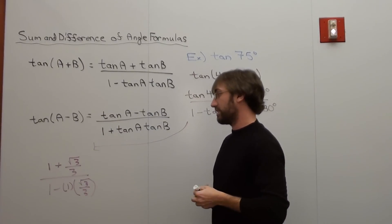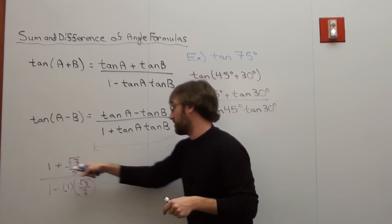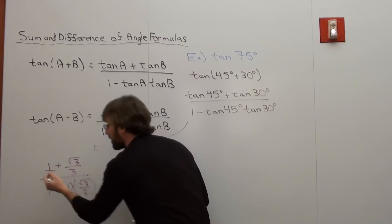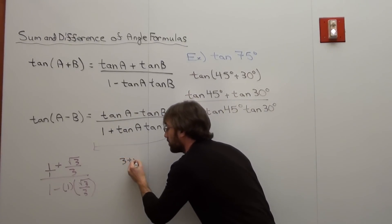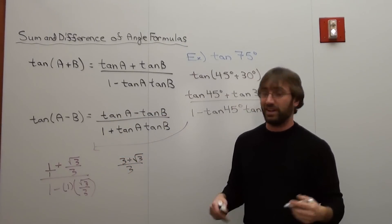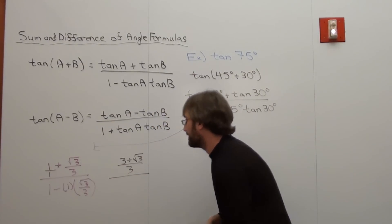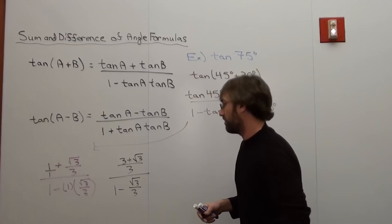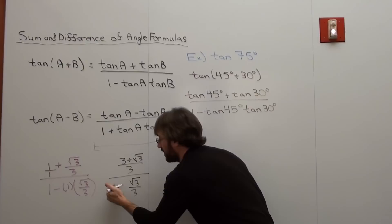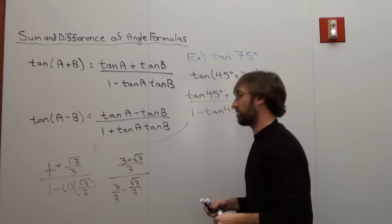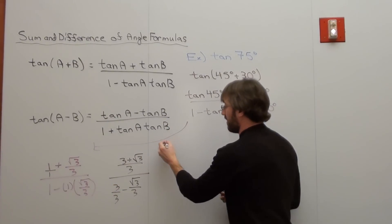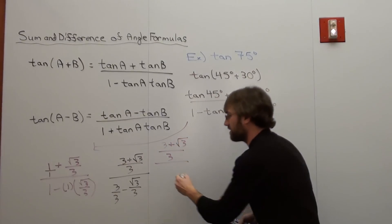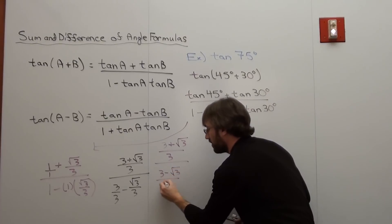So I've got to simplify this. Maybe I should give these the same denominator. The common denominator is going to be 3. So that's going to be 3 plus √3 over 3 in the numerator. And then this is going to be 1 subtracted by √3 over 3, which is the same thing as 3 over 3 minus √3 over 3. If I take that even a step further, I have 3 plus √3 over 3 divided by 3 subtracted by √3 over 3.